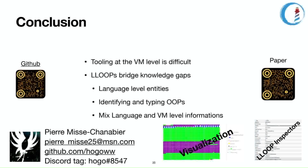To summarize, in conclusion: tooling at the VM level is difficult, particularly because it does not manipulate the same kinds of entities that language-level developers are aware of. We propose to bridge knowledge gaps with language-level ordinary object pointers — LOOPs — because they are language-level entities, in our case objects. This is based on identifying and typing OOPs, and mixing language and VM-level information so we have access to everything rather than only part of it. The paper QR code is on the right and the GitHub QR code is on the left. Thank you for watching, and if you have any questions you can comment or send me a mail.